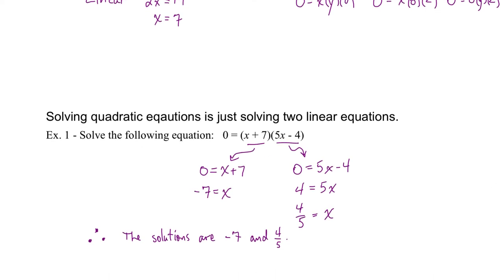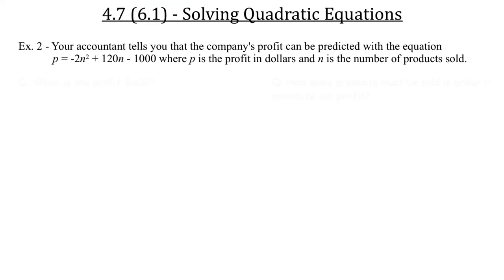Now, of course, it's not always given to us in factored form. So we have to take that into account. So let's put this into some sort of real life context. You have a business. You're running your own business. And your accountant tells you that the company's profit can be predicted with an equation. And that equation is P for profit is equal to this amount. So P is the profit in dollars. And N is the number of products sold. So depending on how many products we sell, we'll make or lose money.